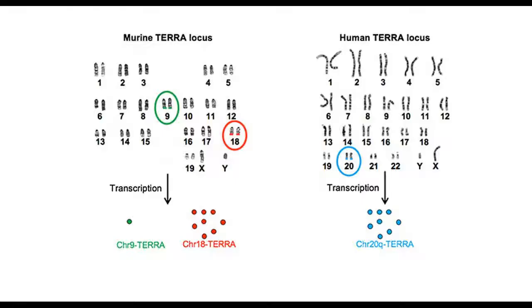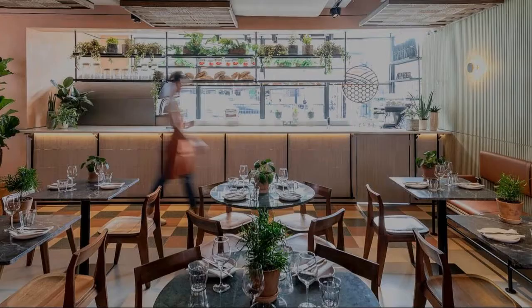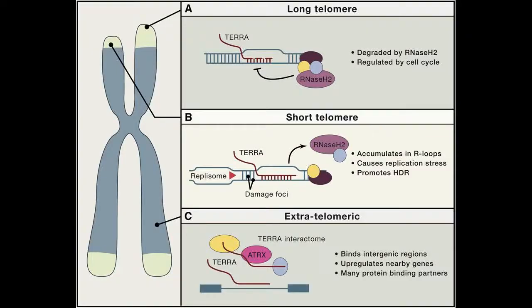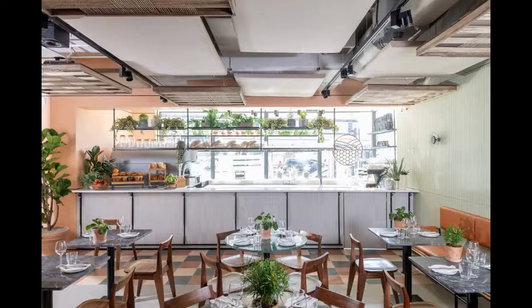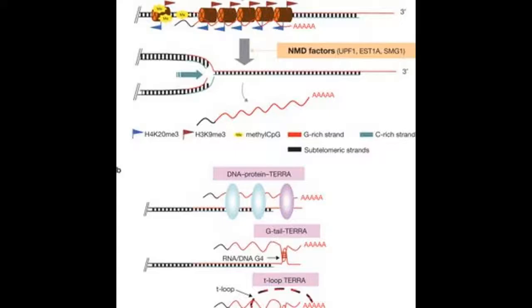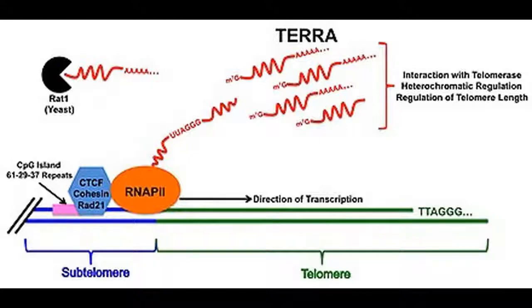Telomeric repeat-containing RNA (TERRA), due to the breadth of roles in which it is implicated for maintaining the genomic integrity at the ends of chromosomes, has also been shown to be associated with a number of disease states, including syndromes related to inappropriate telomere shortening and cellular aging, and the progression of cancer.